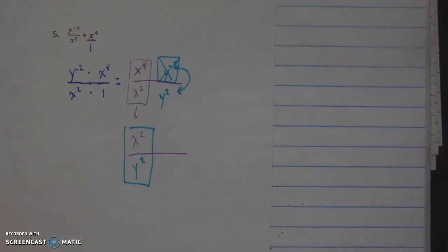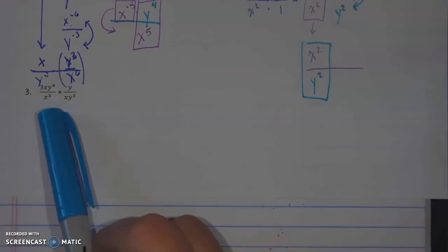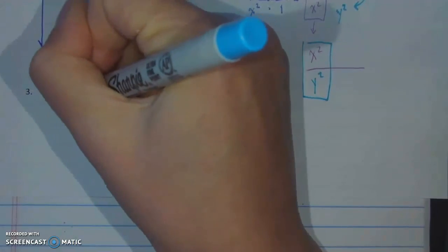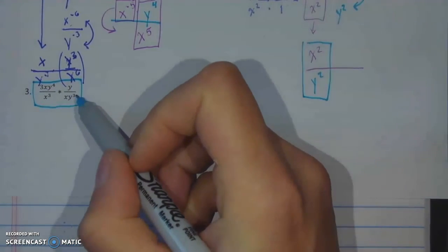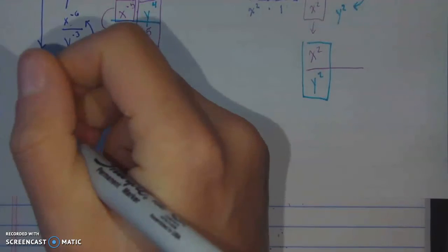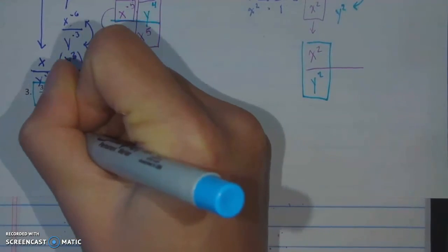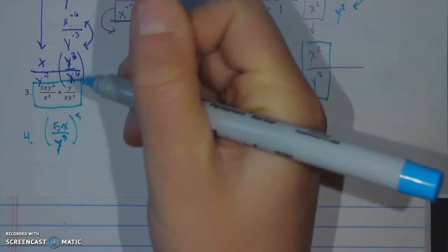Today all I want you to do are two problems. I want you to do this one right here, which is 3xy to the 4th over x to the 3rd times y over xy to the 3rd. And I also want you to do this problem, which is 5x over y to the 3rd to the 3rd. So just do those two. Show your work, submit a picture, and call it a day for math. Hope you guys had a good one. I will see you soon.